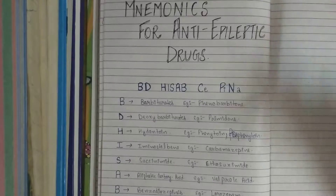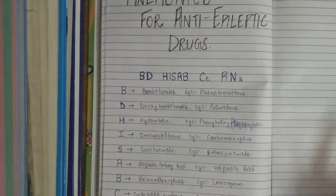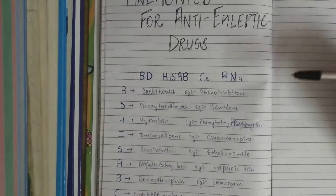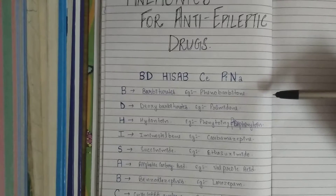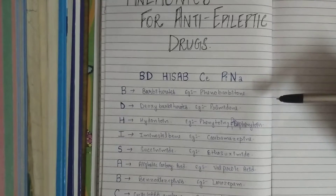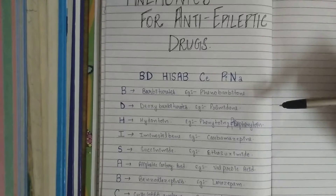The mnemonic is B.D.H.S.A.P.E.N.A. The B stands for barbiturates, for example, phenobarbitone. D stands for deoxybarbiturates, for example, primidone.